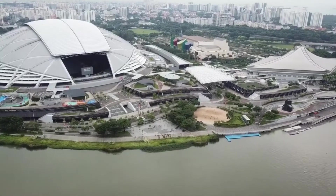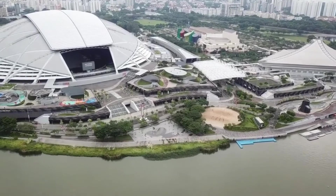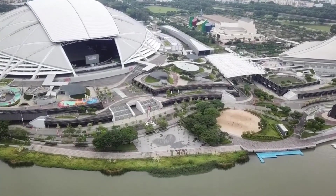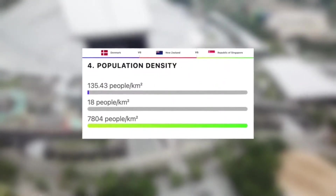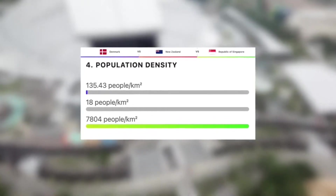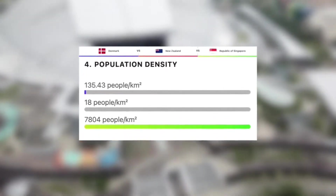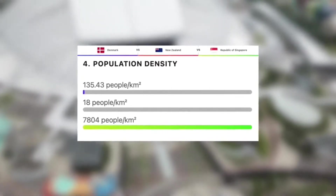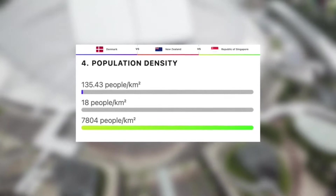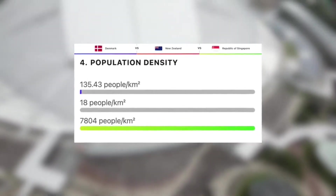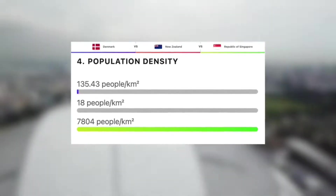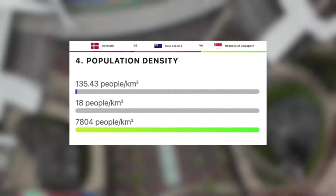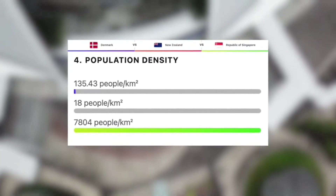Now let's move on to their population densities. In my opinion, the lower here the better — a lower population density means more space, less congestion and less traffic. Starting off with the lowest, we have New Zealand, with an incredible 18 people per kilometre squared, making them one of the least densely populated countries anywhere in the world. Next we have Denmark, with roughly 135 people per kilometres squared. And then finally, Singapore — are you ready for this one? Singapore has a mind-boggling 7,804 people per kilometres squared, making them the third most densely populated place on earth, behind Monaco and Macau.